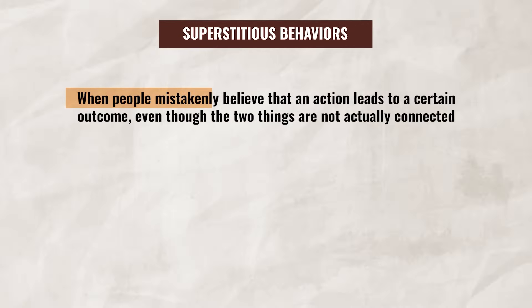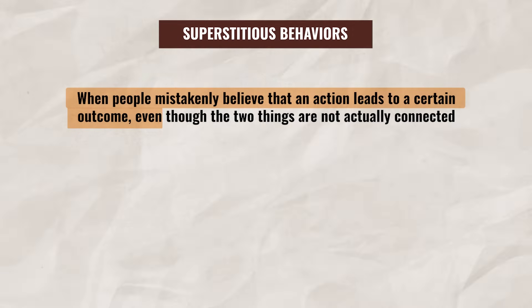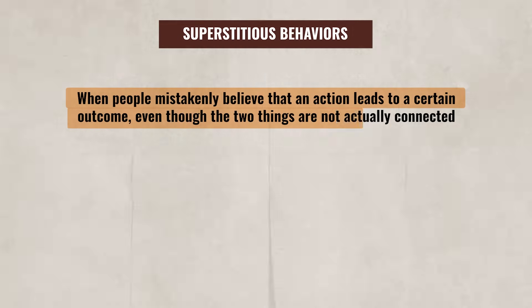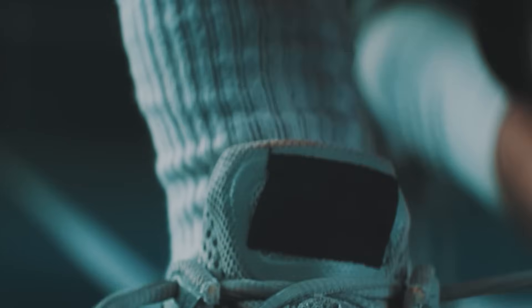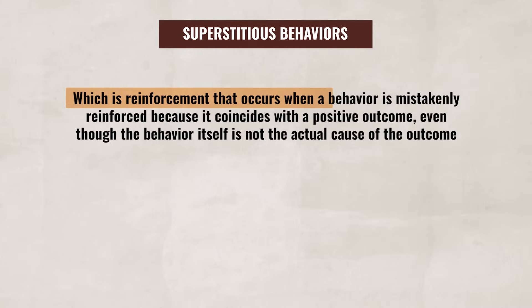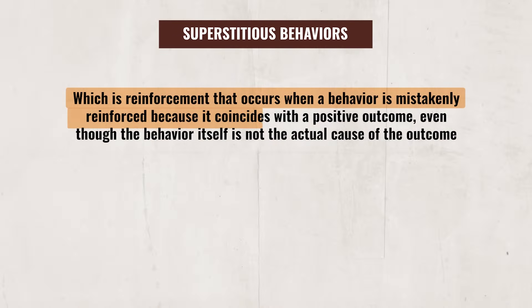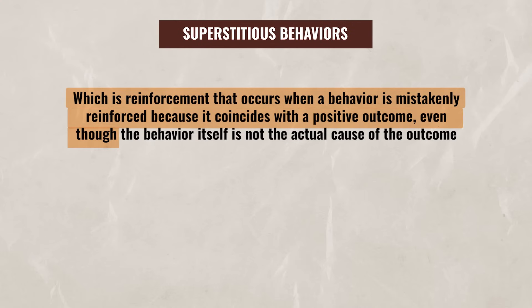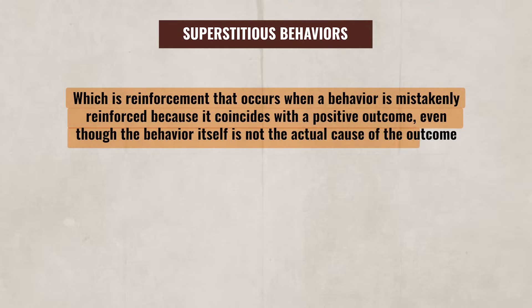Next, we need to talk about superstitious behaviors, which occur when people mistakenly believe that an action leads to a certain outcome, even though the two things are not actually connected. For example, if a basketball player always wears certain socks during a game and plays really well, they might think that the socks are lucky, resulting in them wearing the socks the next game. This belief is known as a superstitious behavior, and it is caused by coincidental reinforcement — which is reinforcement that occurs when a behavior is mistakenly reinforced because it coincides with a positive outcome, even though the behavior itself is not the actual cause of the outcome.